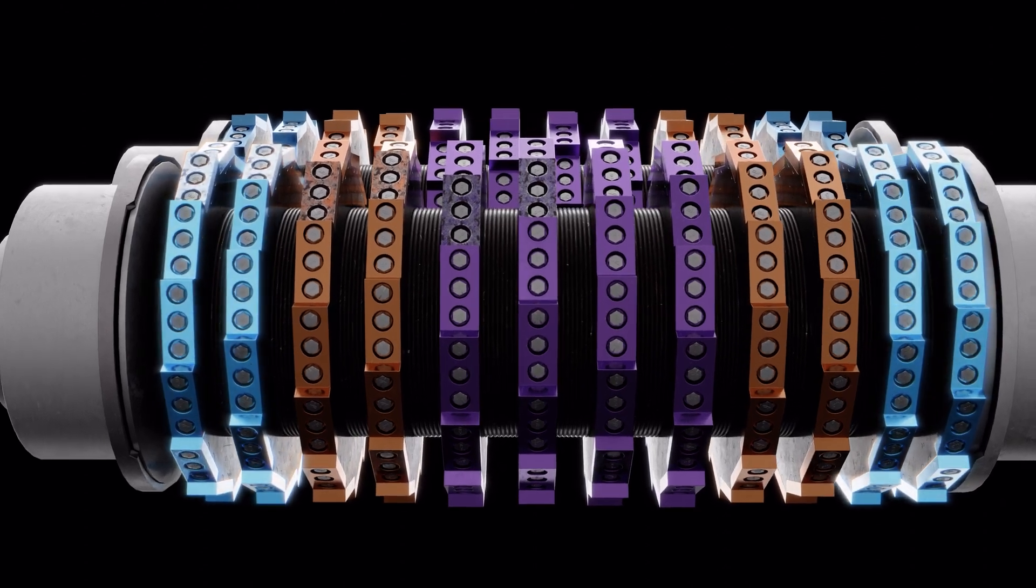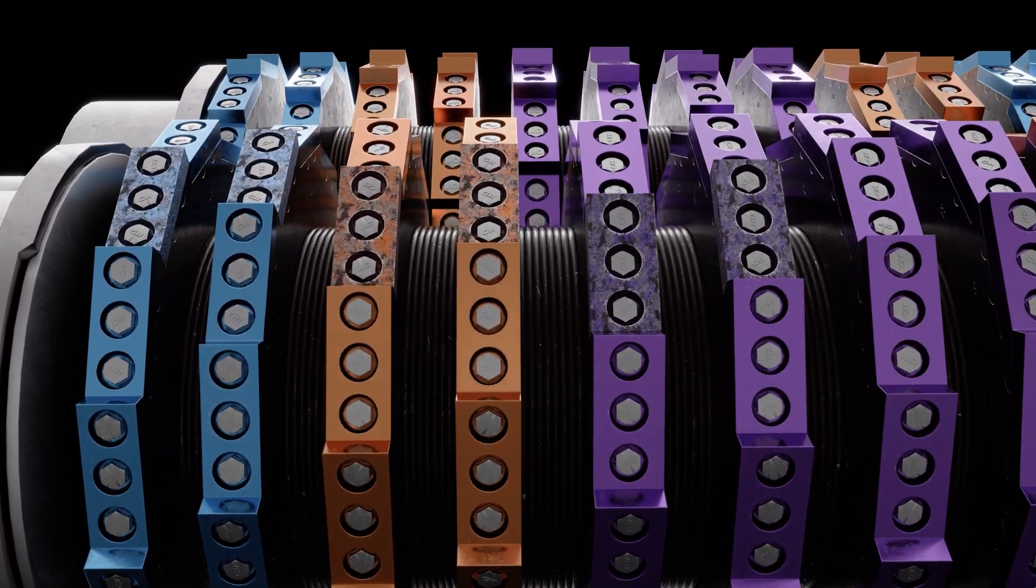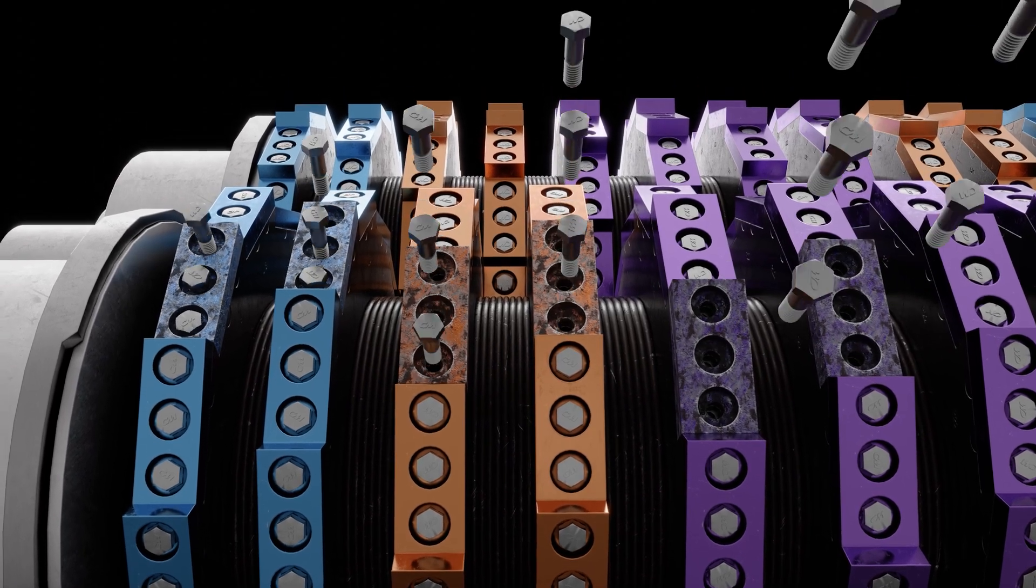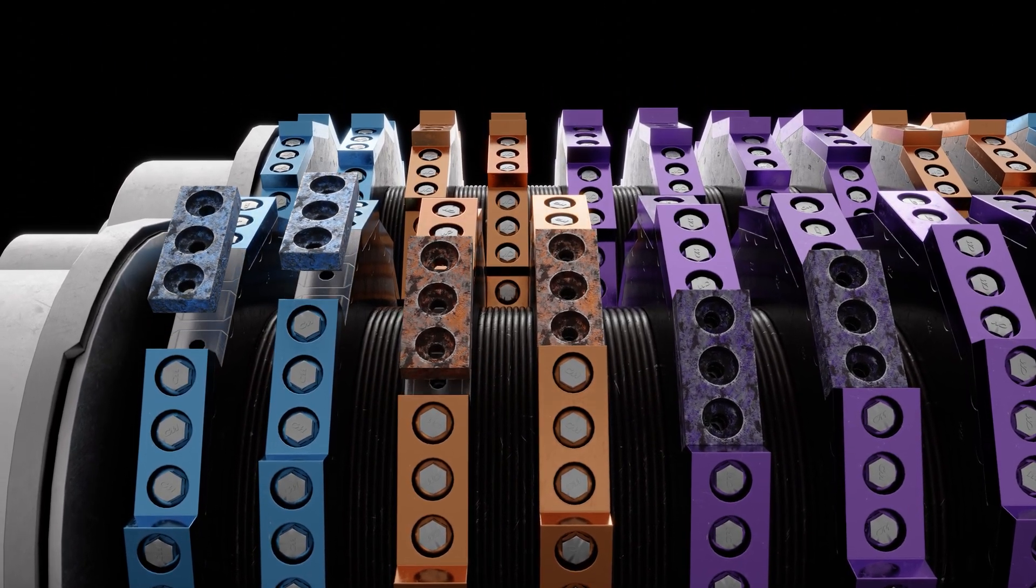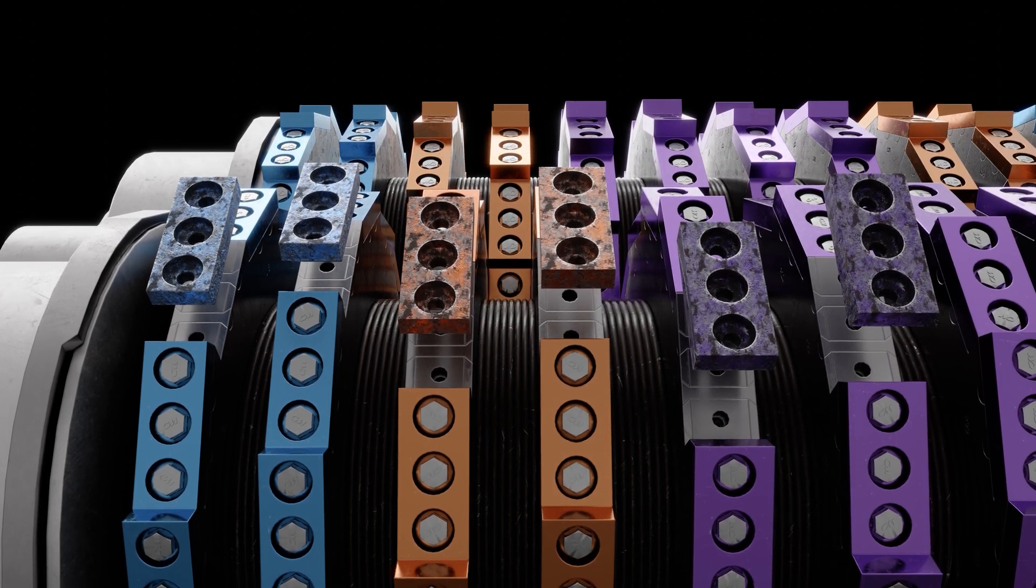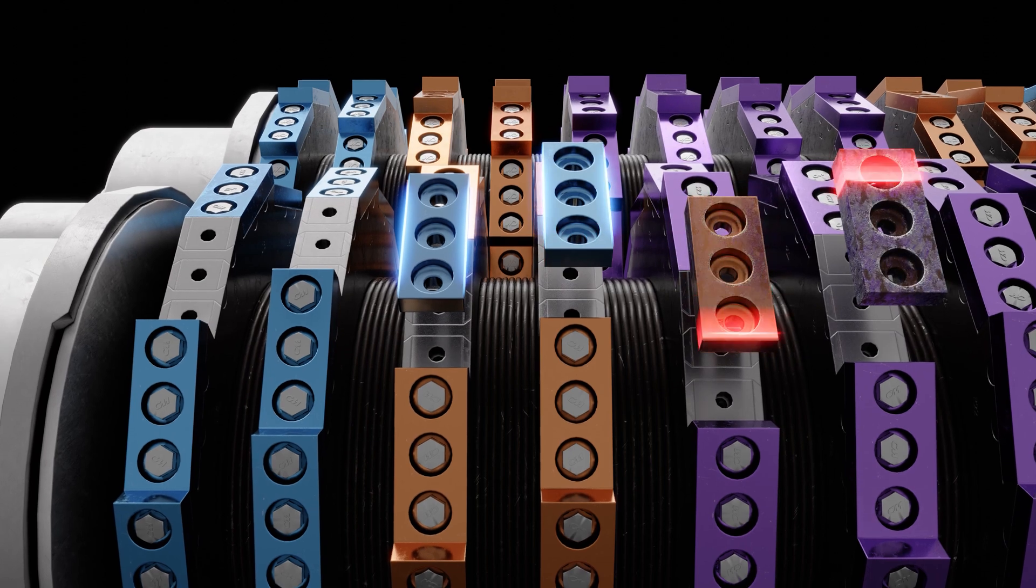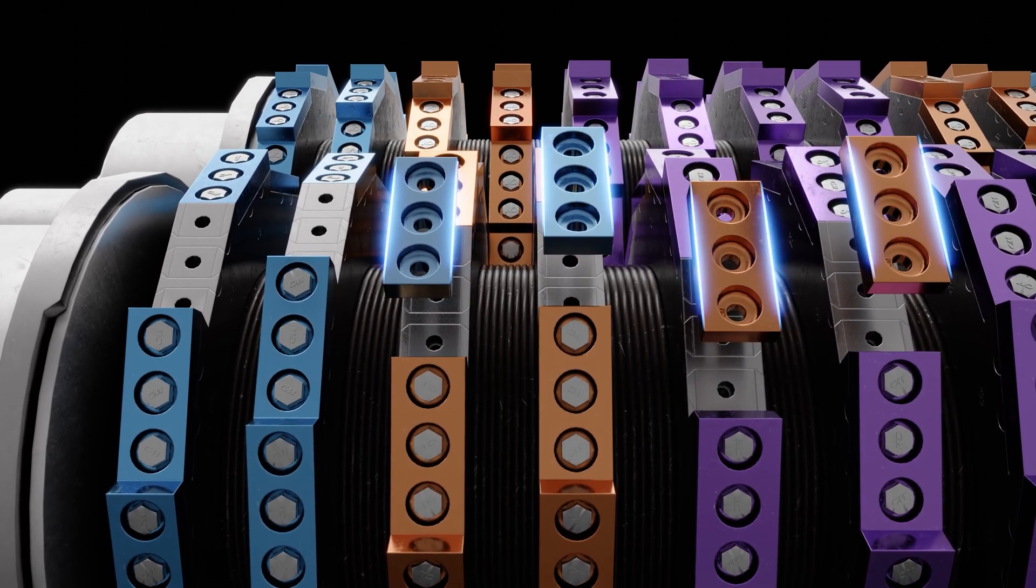The knife rotation process is designed for maximum efficiency and resource conservation. Once the purple 2.2-inch knives wear down, they are resharpened to 2.0 inches and moved to the orange slot. Simultaneously, the 2-inch orange knives are sharpened down to 1.8 inches and relocated to the blue section.